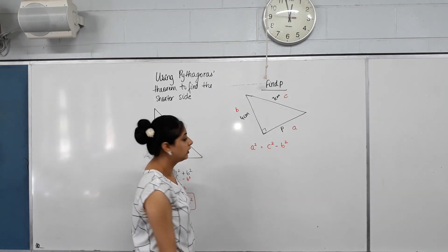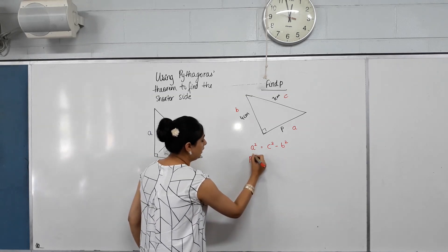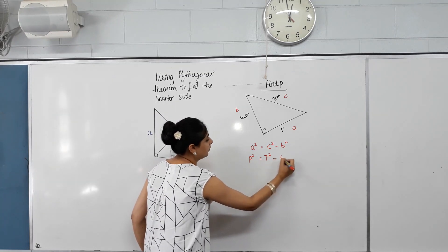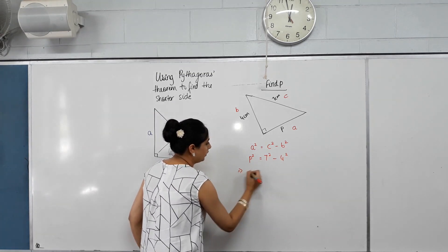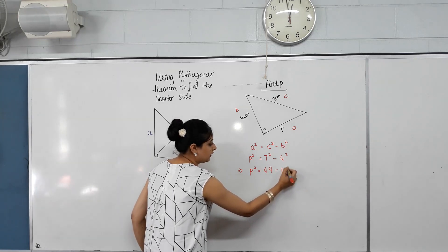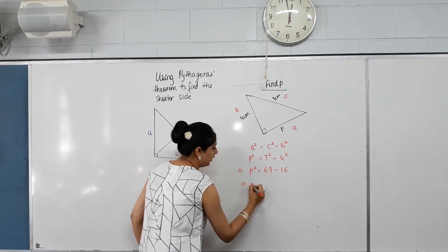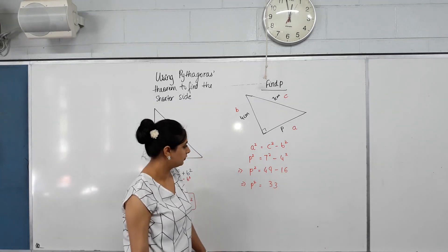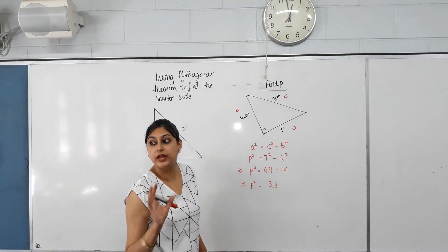Then, subbing the numbers. A is P. What's C? 7. What's B? 4 squared. What's 7 squared? 49. What's 4 squared? 16. What's 49 minus 16? We haven't calculated P yet.